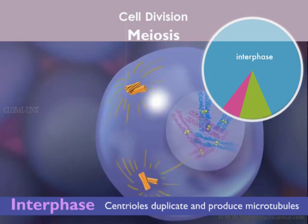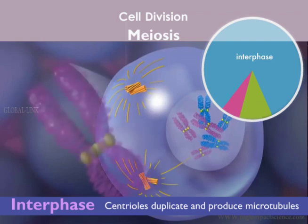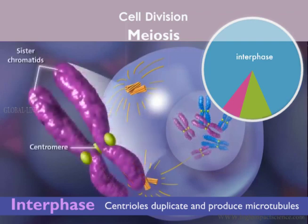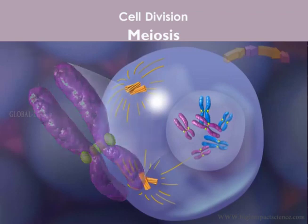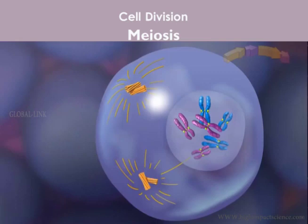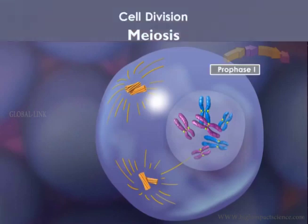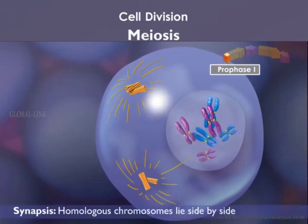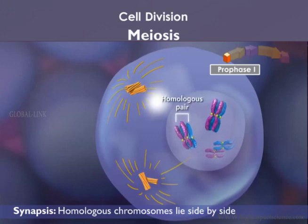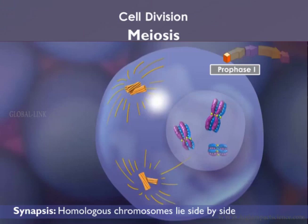Sister chromatids remain attached at the centromere and condense as the cell enters prophase 1 of meiosis. Up to this point, the cell looks similar to mitosis, but two events occur in meiosis that do not occur in mitosis. The first event occurs during prophase 1, when homologous pairs of chromosomes lie side by side in a process called synapsis, forming a tetrad or bivalent. Remember, homologous pairs share similar, but not necessarily identical genes.